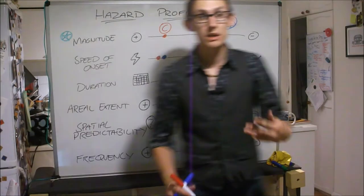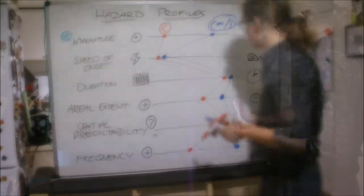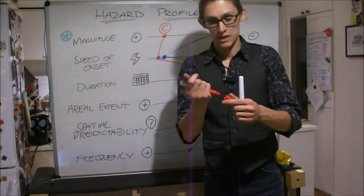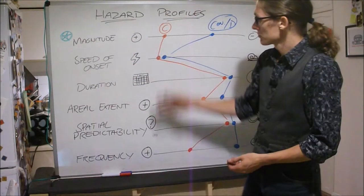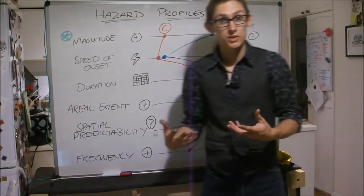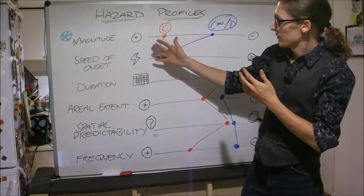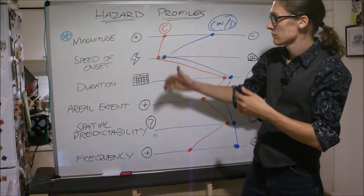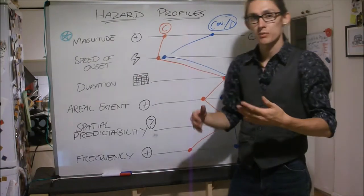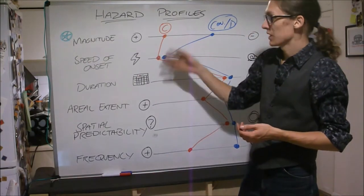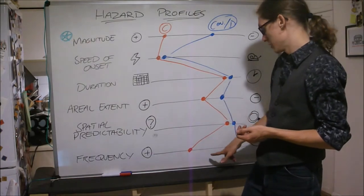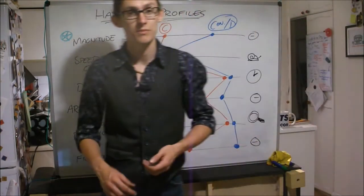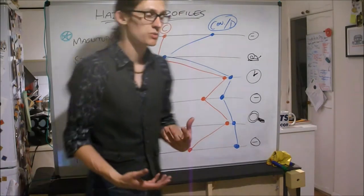And it allows you to look at, okay maybe you've got these earthquakes at these boundaries which are, the earthquakes are bigger for a convergent boundary, but they have a similar speed of onset, similar duration, different frequency.